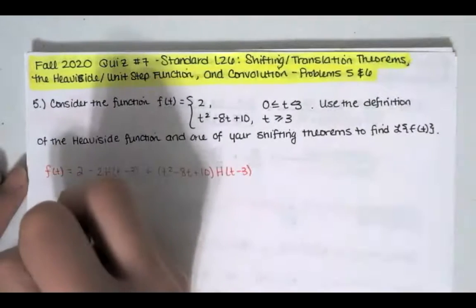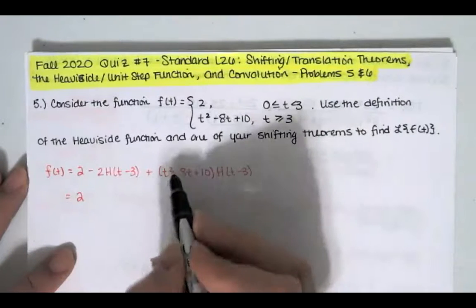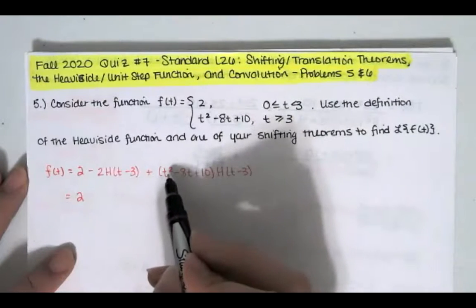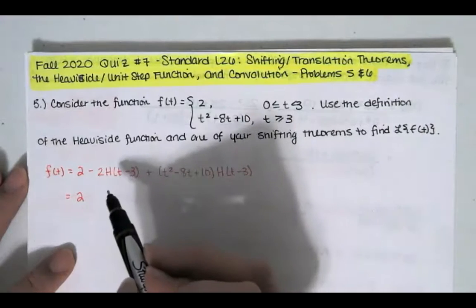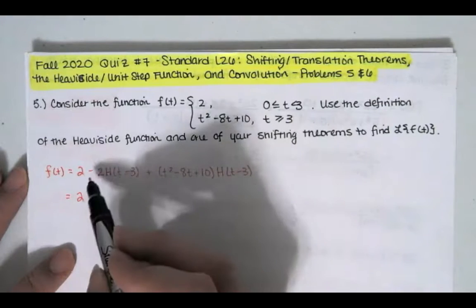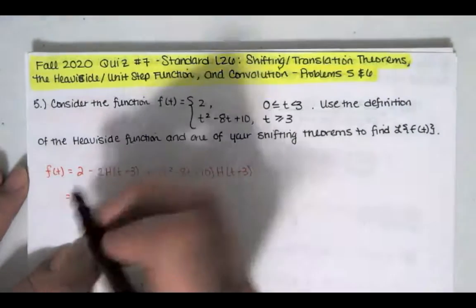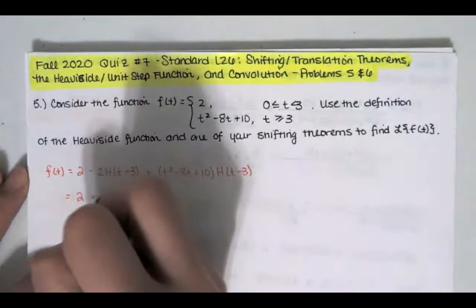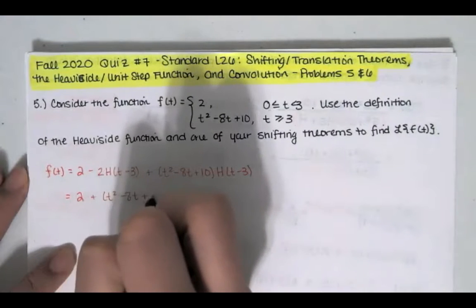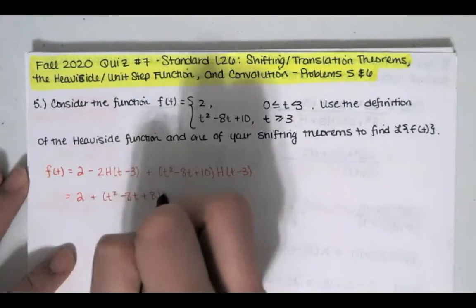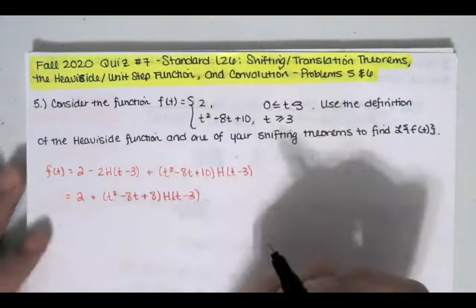We can simplify this. That 2 is still there. We have t squared minus 8t plus 10 times the Heaviside function, minus 2 times the same Heaviside function. When we combine those, we get t squared minus 8t plus 8 times the Heaviside function at t minus 3.